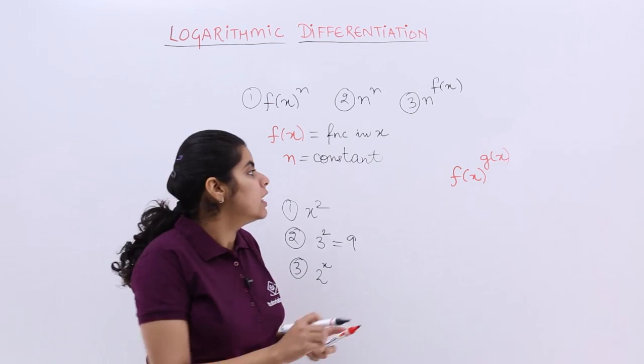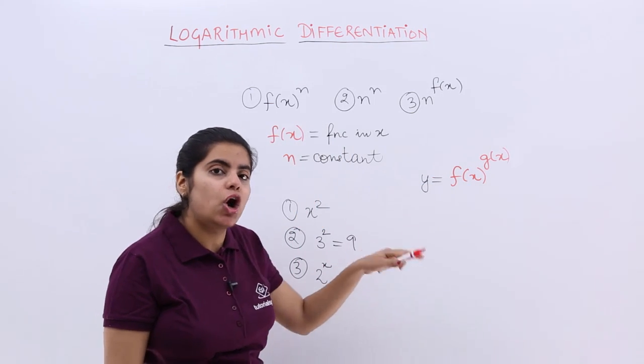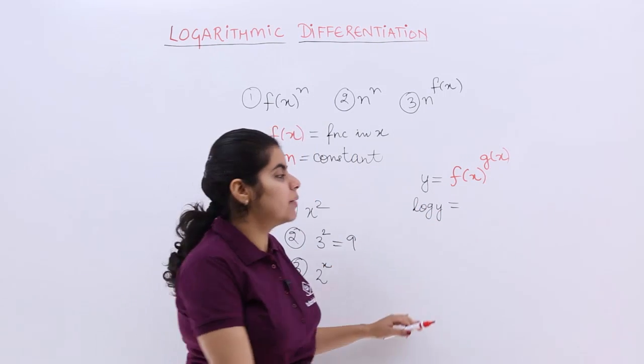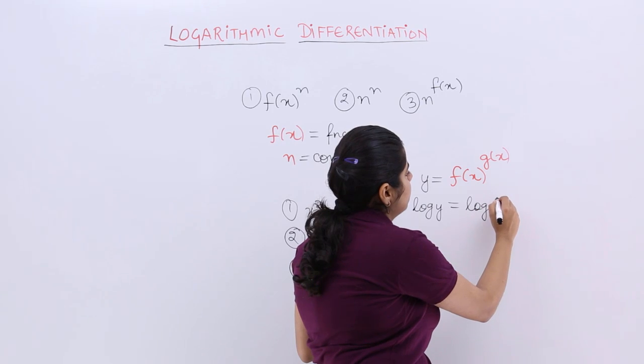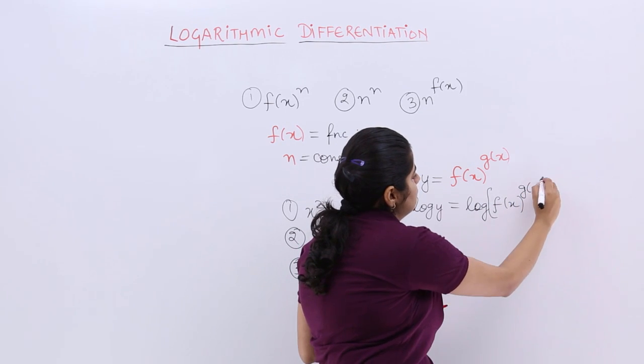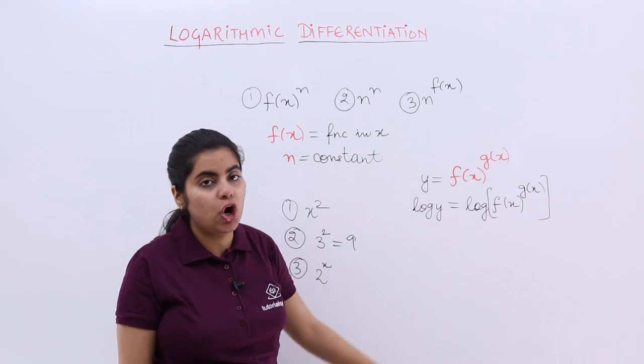What is to be done? We say that let this is y and then we take the log both sides. So it becomes log y here and here it becomes log f(x) raised to the power g(x). Got it? Now what has been done? We have taken log both sides.